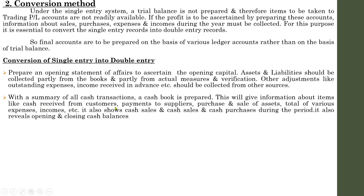We need many items for the preparation of the trading profit and loss account and balance sheet. In the trading account we need opening stock, closing stock, purchases, and sales. In the profit and loss account we deal with indirect expenses and indirect incomes. In the balance sheet we need assets and liabilities. By preparing the cash book, we get information about many cash transactions. Next, prepare relevant accounts to find credit purchases and credit sales.